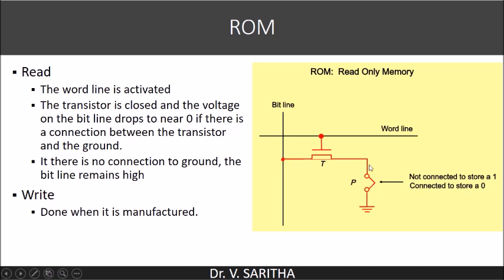In order to store zero, we are supposed to connect this. And if we want to store one, this is not connected. So this connection should not be there if we want to store one; it should be there if we want to store zero. In the case of write operation, it is done during the manufacturing process only — in each cell, whether this connection will be there or not is decided and done only during manufacturing time.